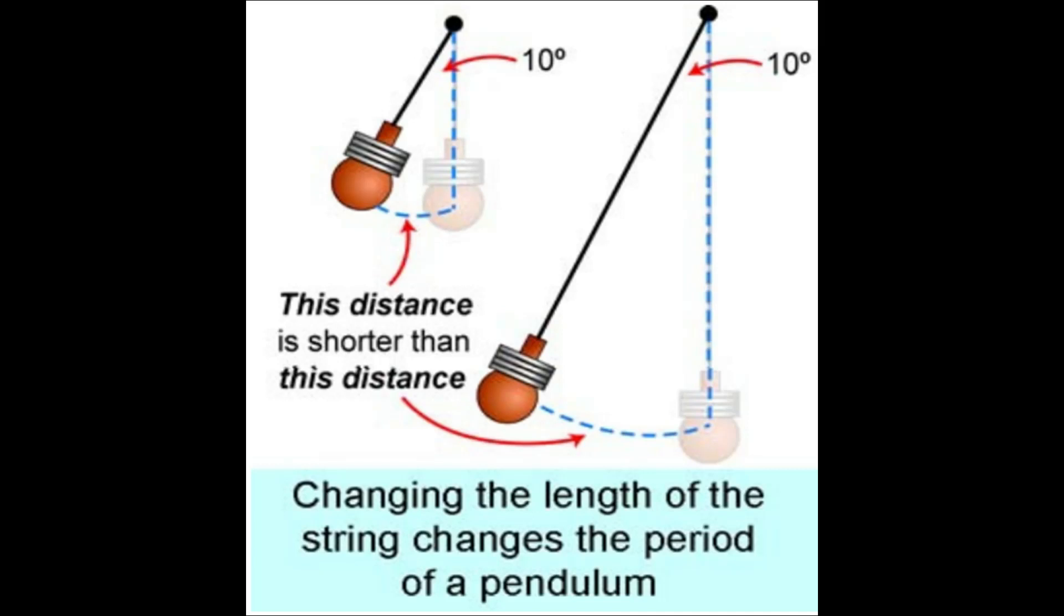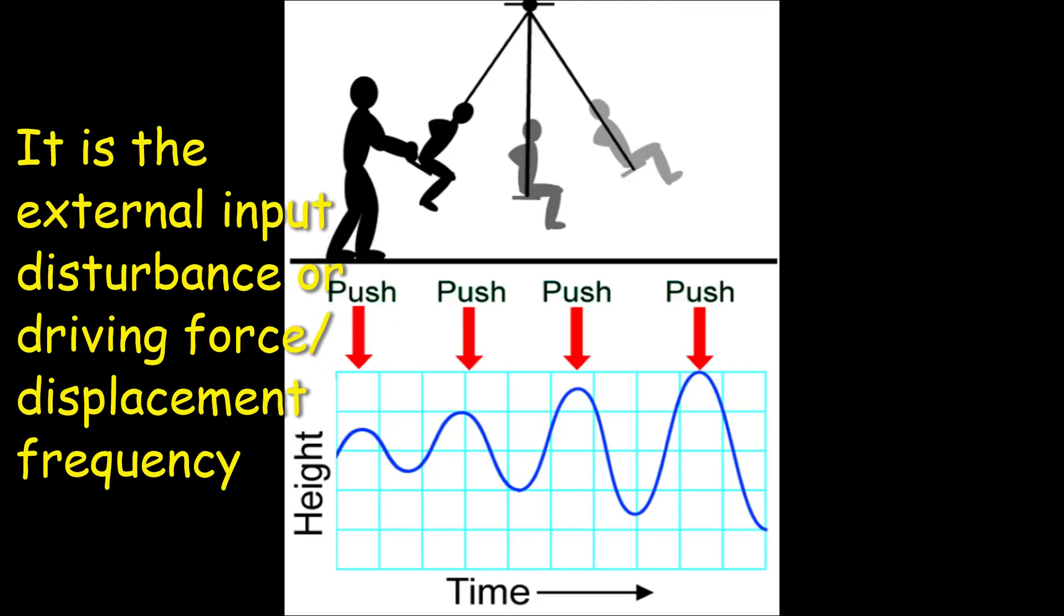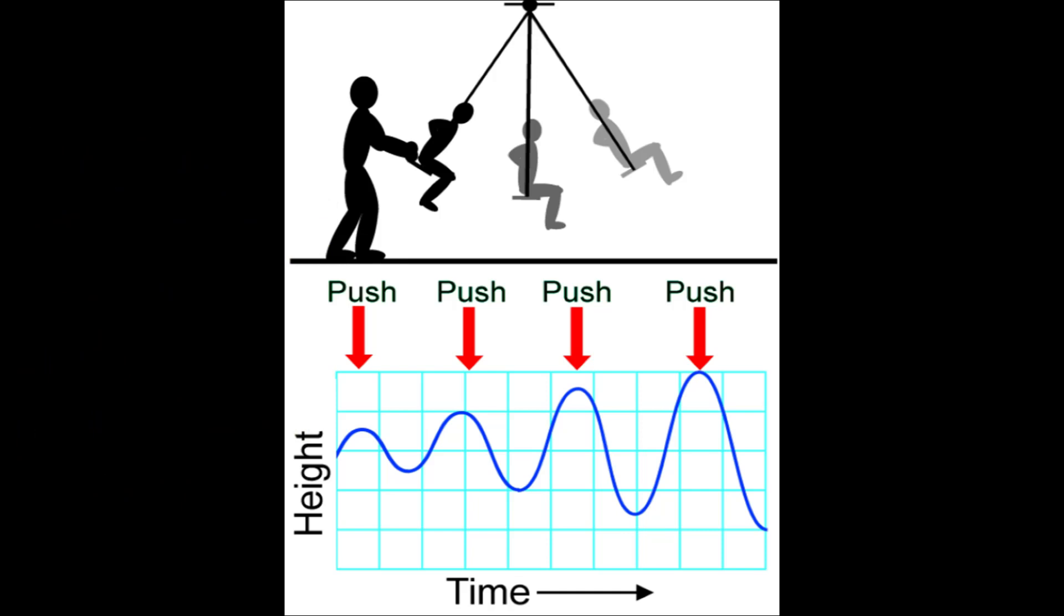Now we will try to understand the excitation frequency. The well-known example of a swing: in order to keep a swing swinging for a long time, we have to push the swing at the right time, which also increases the amplitude of the swing.